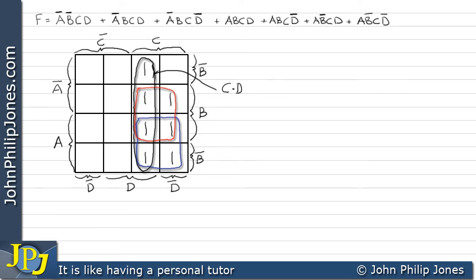So we can see that the black loop is C and D, the red loop is B and C, and the blue loop is A and C.